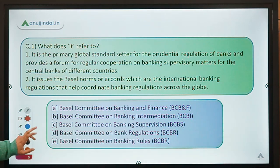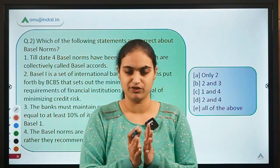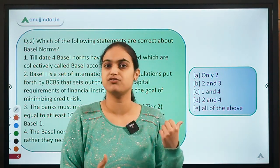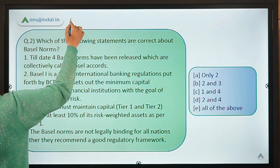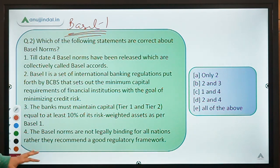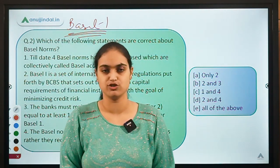Question two asks: which of the following statements are correct about Basel norms? I've already given a brief introduction to Basel norms. This question also covers Basel 1. Basel 1 came up in 1988 for better regulation of banks. Basel 1 norms focused on credit risk. Banks are basically in the business of lending, and borrowers might not be able to pay back the principal or interest amount — so banks will have to suffer in that case.